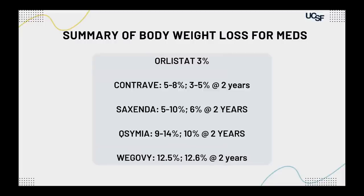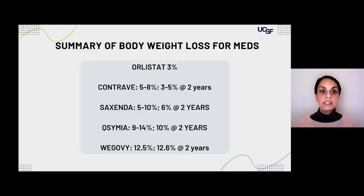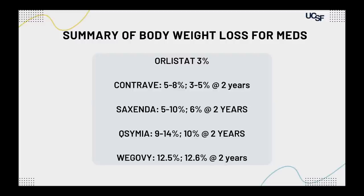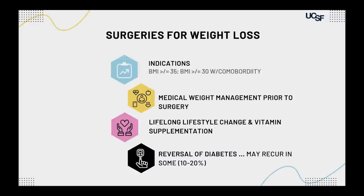To summarize the FDA-approved medications for weight loss: Orlistat ~3% (not clinically meaningful); Contrave ~5–8% at one year with up to 5% maintenance at two years; Saxenda ~5–10% at one year with 6% at two years; Qsymia ~9–14% at one year with 10% at two years; Wegovy ~12.5% at one year with 12.6% maintenance at two years.